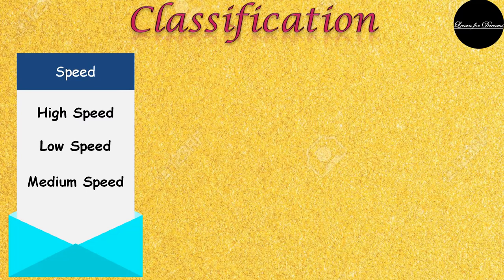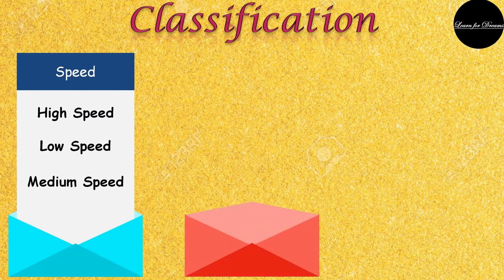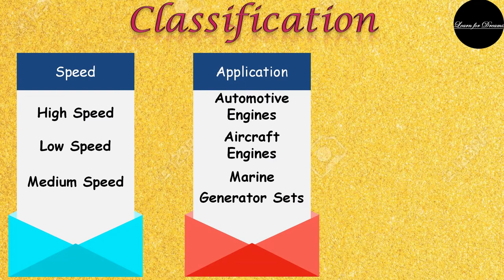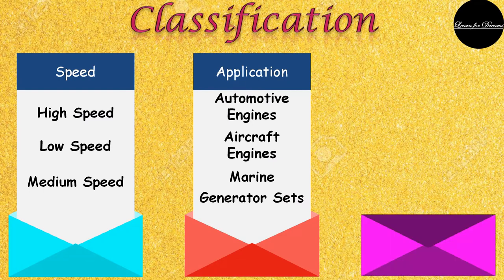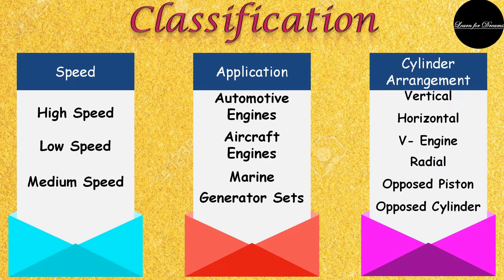A few more classifications are according to speed — whether it is a high-speed engine, low-speed engine, or medium-speed engine. Next, according to application — that is automotive engine, aircraft engine, marine, or generator sets. Next one is cylinder arrangement — how the cylinders are arranged — that is vertical engine, horizontal engine, radial engine, opposed piston, or opposed cylinder engine.